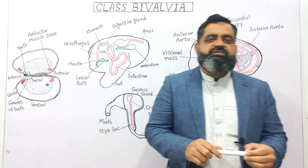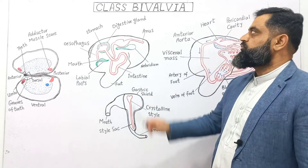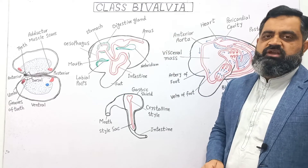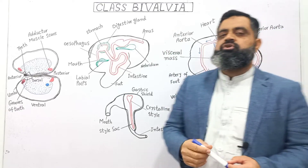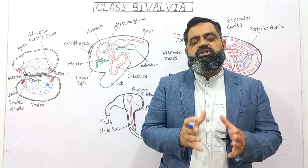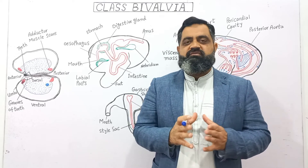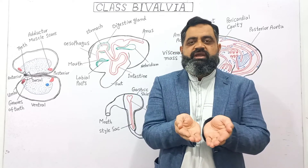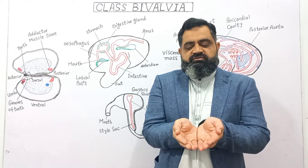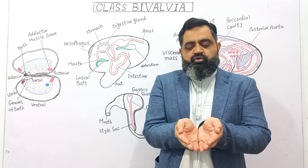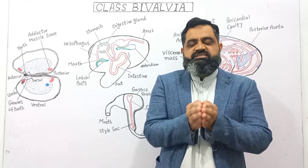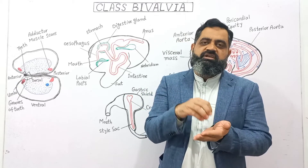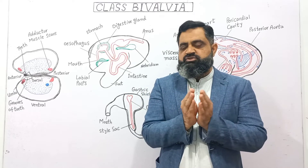First of all, let's look at the meaning of Bivalvia. 'Bi' means two and 'valvia' means leaf, because the body of Bivalvia includes two leaf-like structures — just like two hands — and they close with each other to form a single shell-like structure. The animal of class Bivalvia lives inside these two shells.